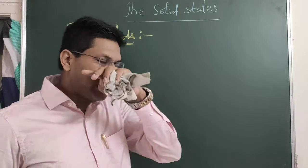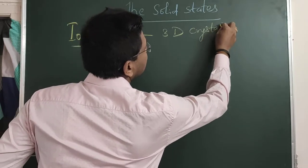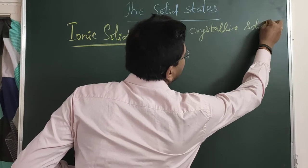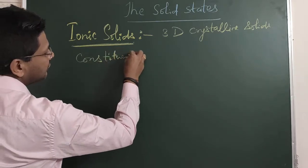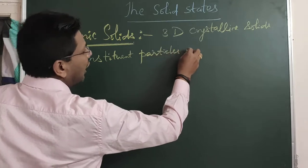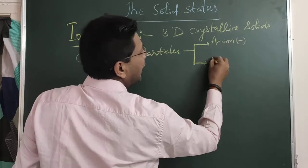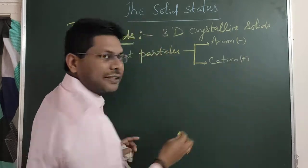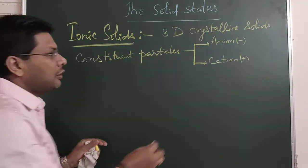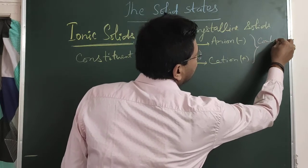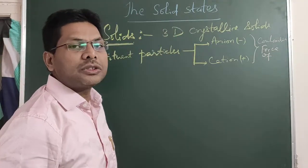Ionic solid is actually a type of three-dimensional crystalline solid. The constituent particles here are ions. Ions are basically two types: anions, which have negative charge, and cations, which have positive charge. This cation and anion are held together by coulombic force of attraction, also called electrostatic force of attraction.